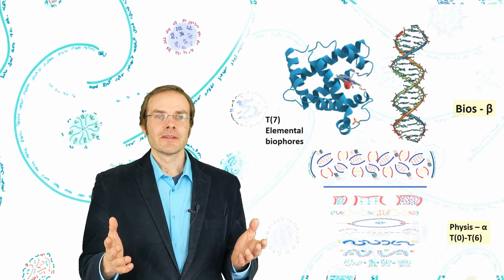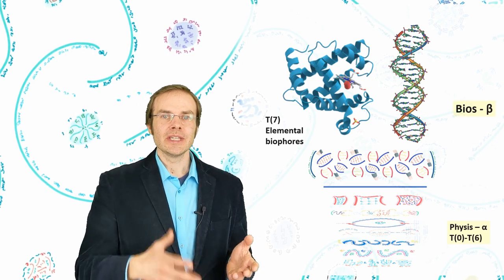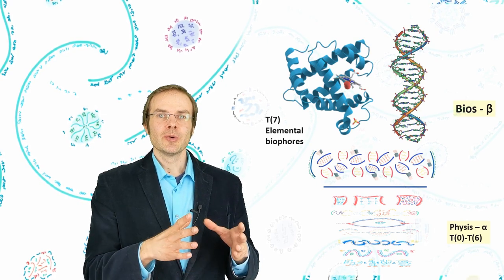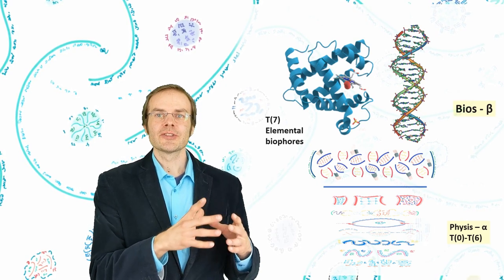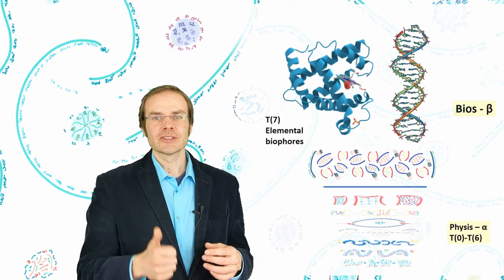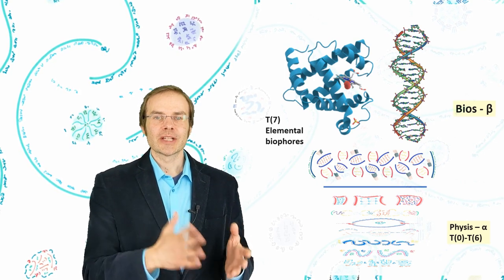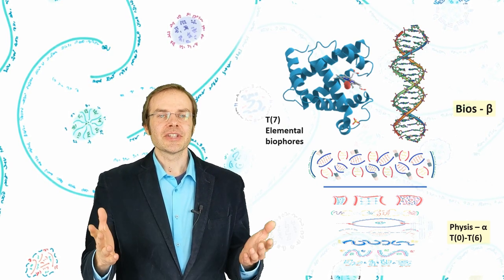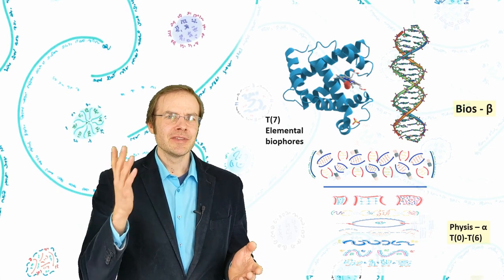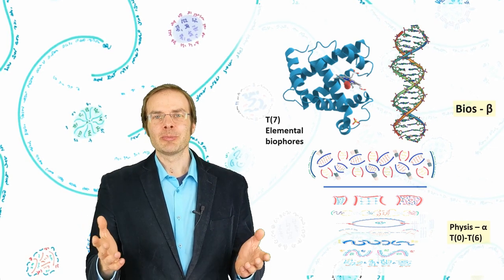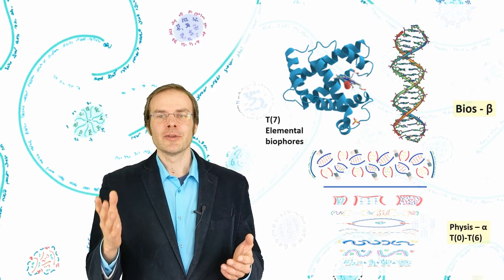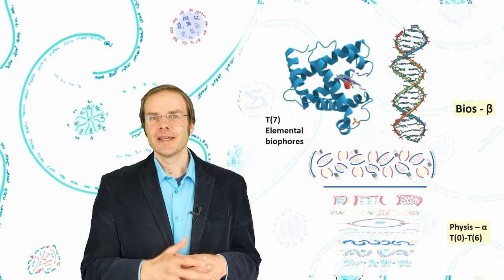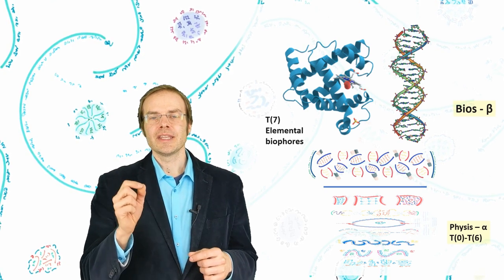Of course mainstream biology has its models to explain this. There are the so-called chaperones, which are other proteins, other enzymes, whose function it is to help the other enzymes to reach their correct conformation. Well, my objection is there, where does the correct conformation of the chaperones then come from? It just doesn't add up. And the name is a giveaway itself, in my opinion, because it's like chaperoning scientists not to come up with any illicit ideas about this whole thing.